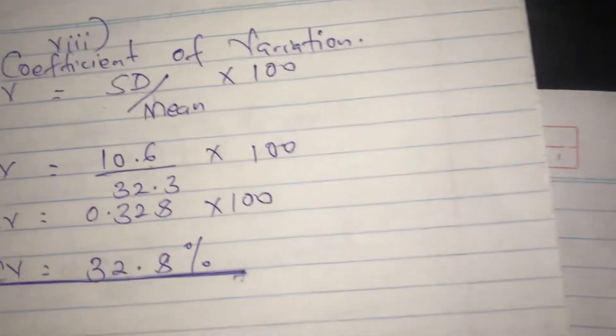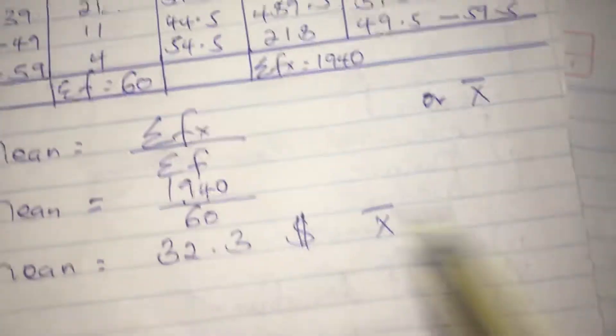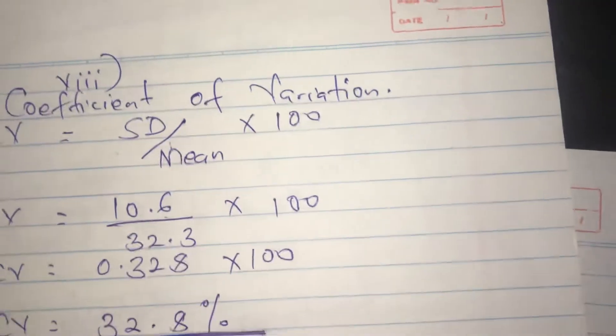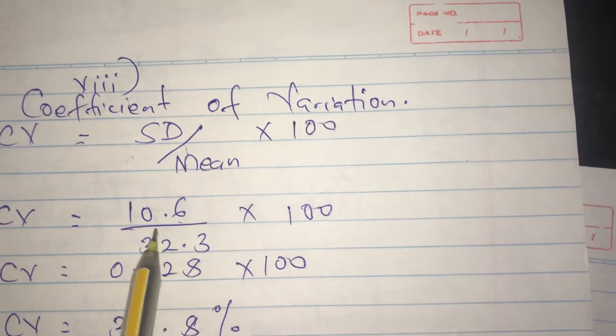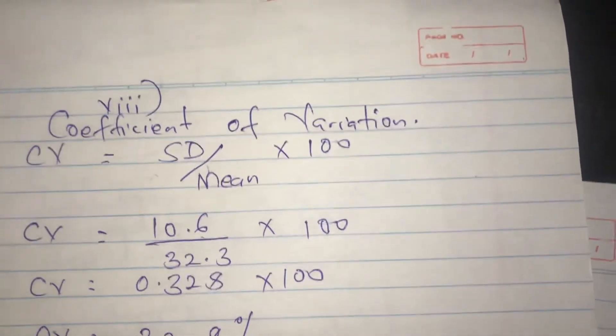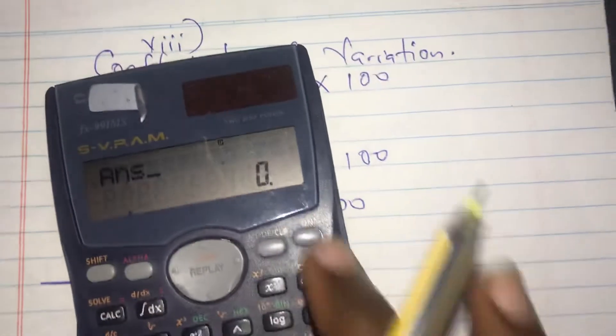The mean we had also calculated was 32.3, so we use that here. Our calculation is 10.6 divided by 32.3, then we multiply by 100.